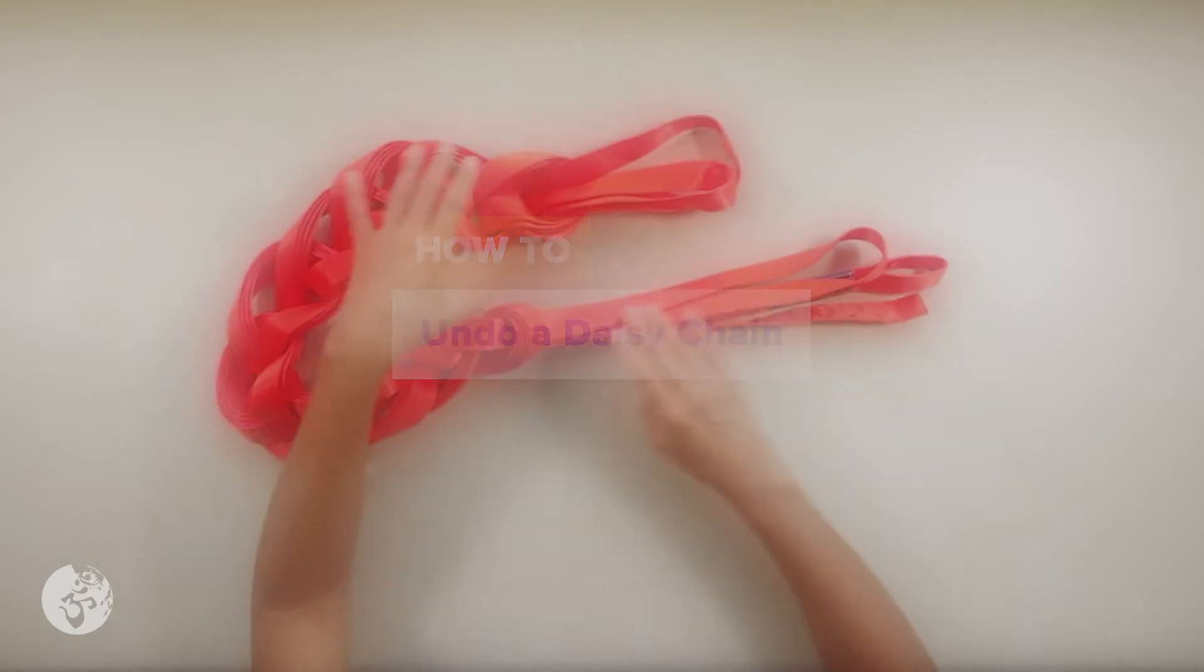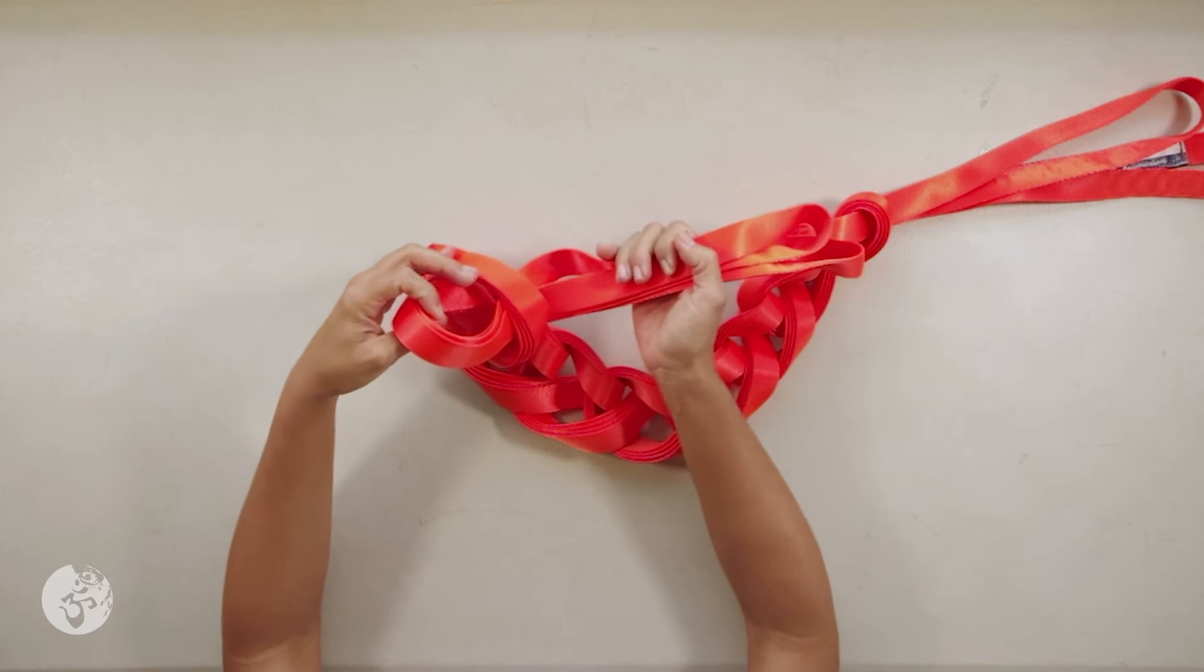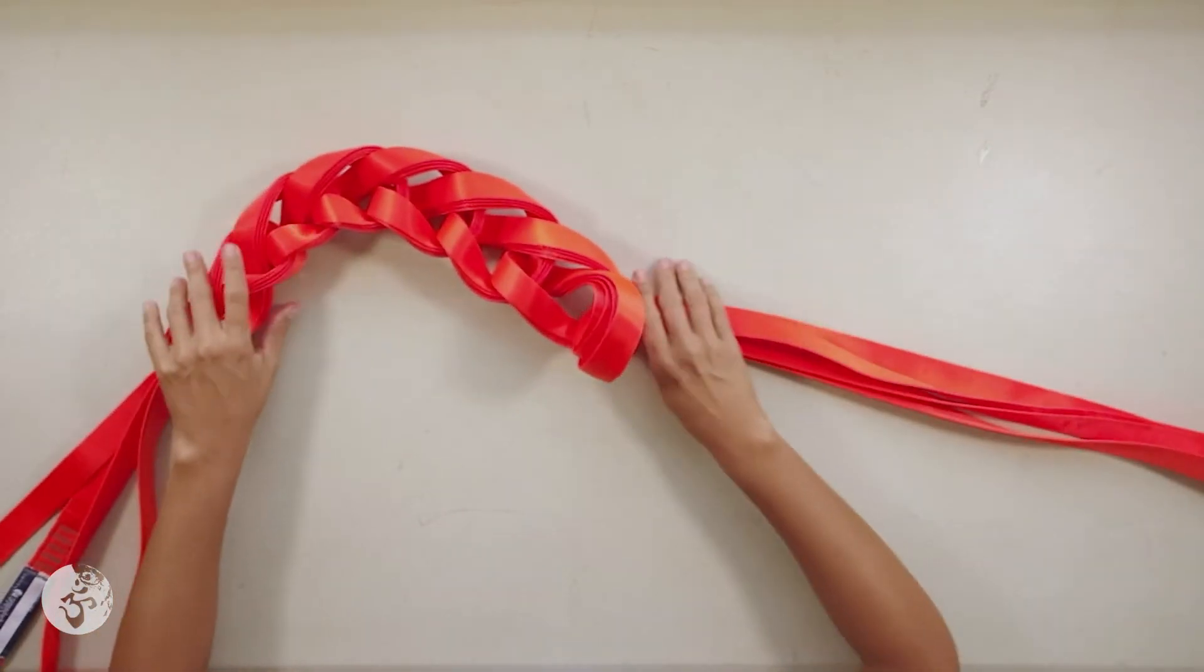To undo this daisy chain, all I have to do is take this end out and pull on the line and the line is going to come.